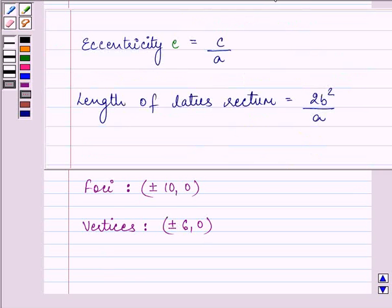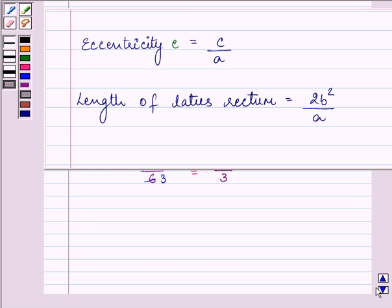Now, the eccentricity e is c/a, that is 10/6, which on simplifying can be written as 5/3.